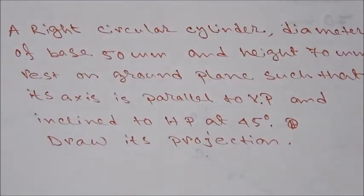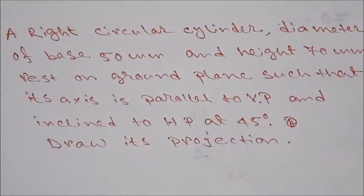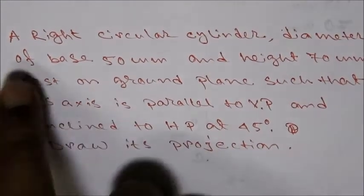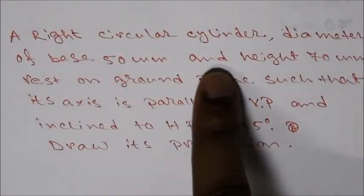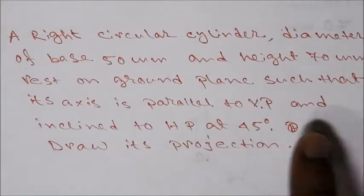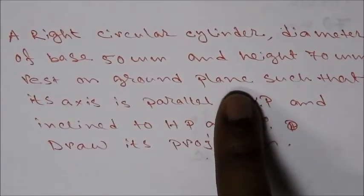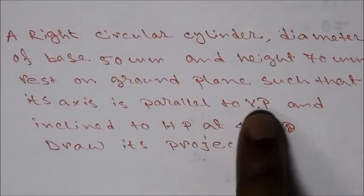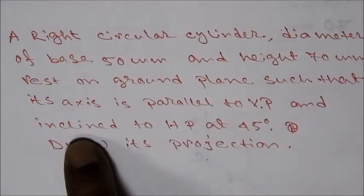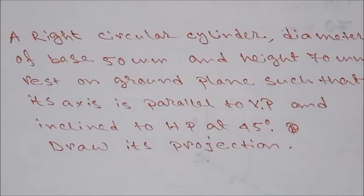In this lesson, we will see a cylinder projection. Let's see the question first. A right circular cylinder with diameter of base 50mm and height 70mm rests on the ground plane such that its axis is parallel to VP and inclined to HP at 45 degrees. Draw its projection.